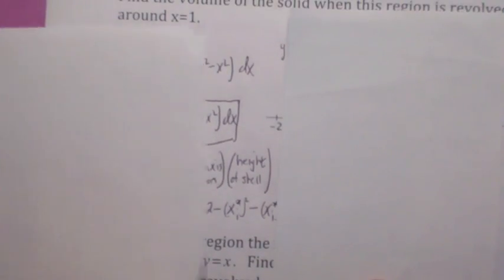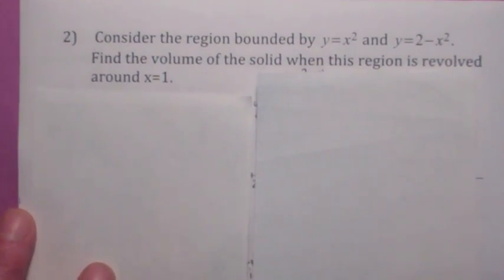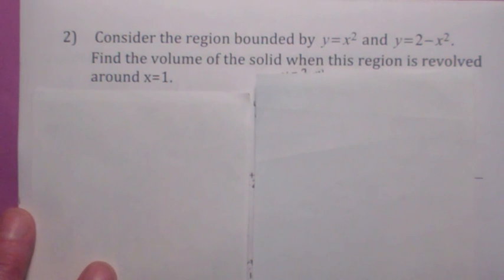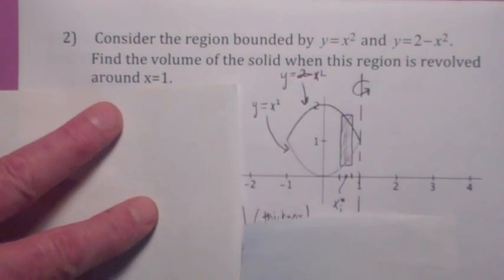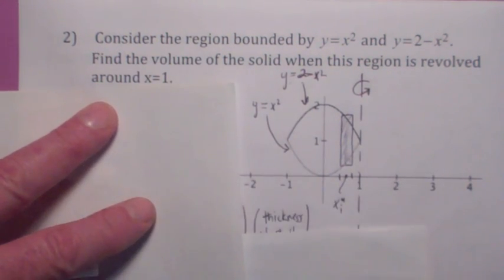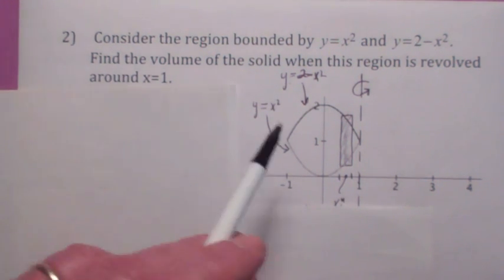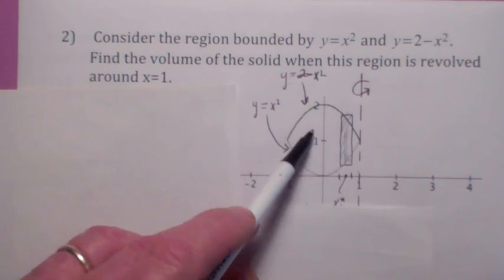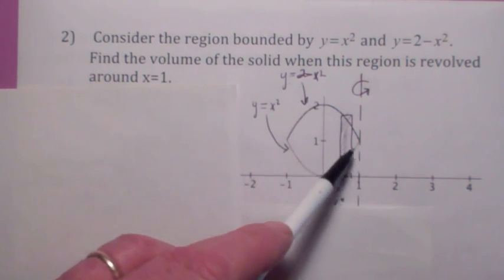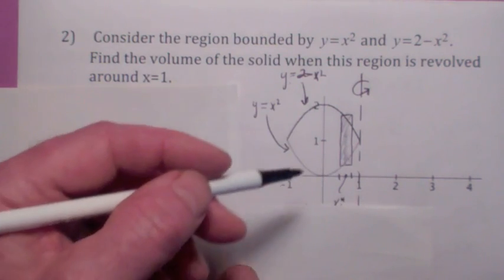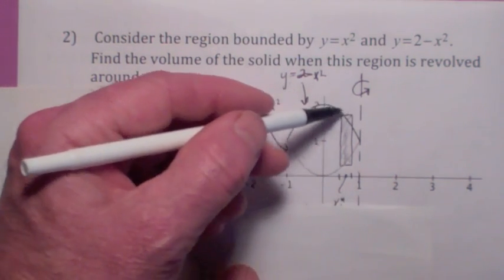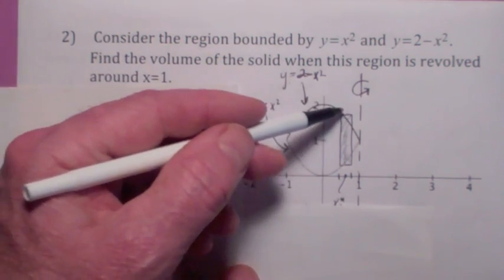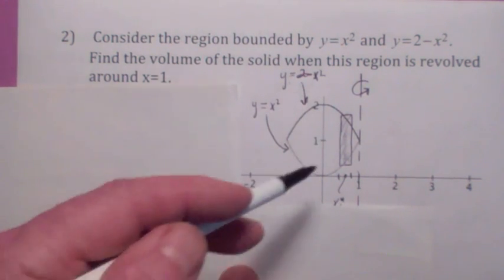Let's look at another example. Suppose we have the region bounded by y equals x squared and y equals 2 minus x squared, and you're revolving this around the line x equals 1. The top function is y equals 2 minus x squared, the bottom function is y equals x squared, and you're revolving this region around the line x equals 1. Again, you could not use the disk washer method because with the washer method you draw your rectangle perpendicular to the axis of revolution and you have the same function on both sides. So we're going to use the shell method.